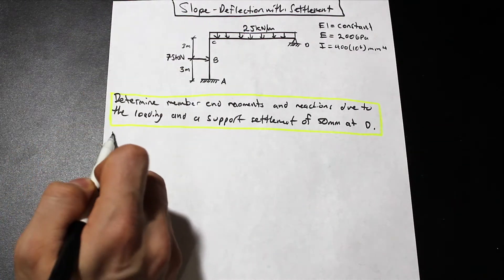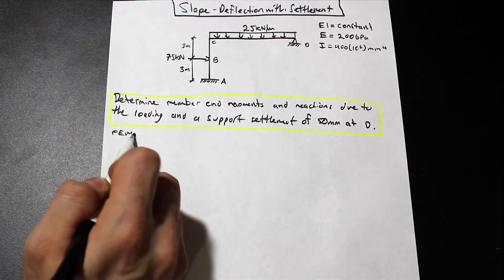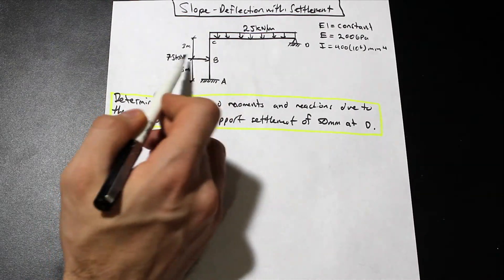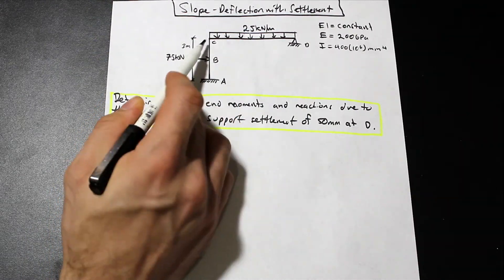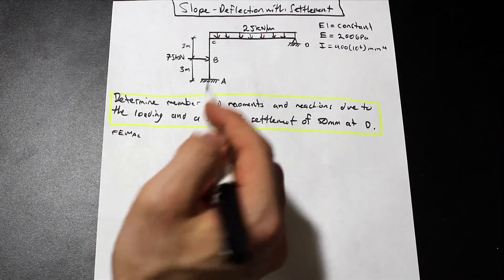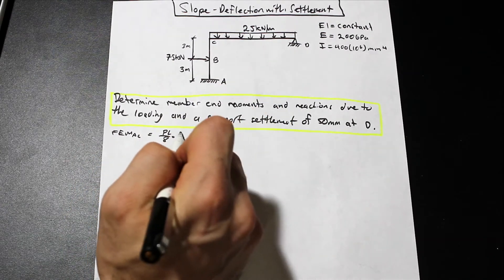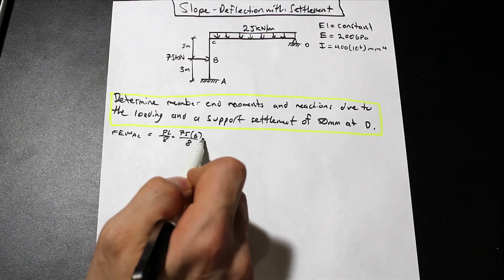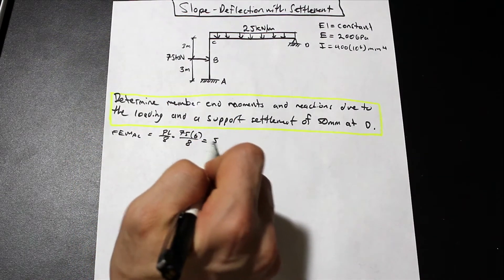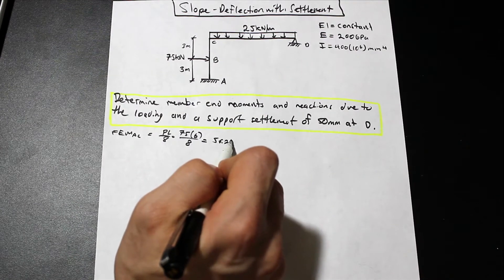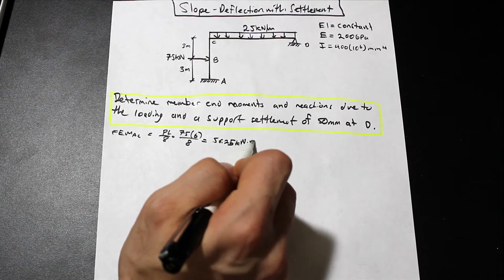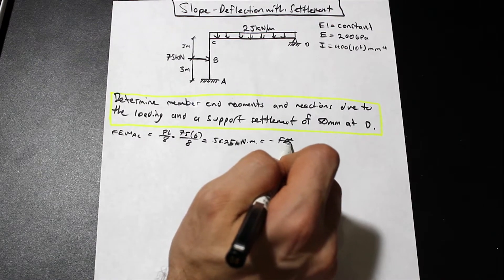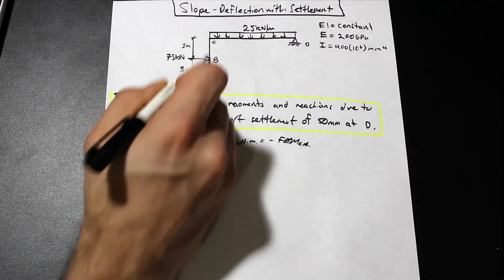The fixed end moment for AC — since we have a point load in the center, halfway between A and C — is going to be PL over 8. That's 75 times 6 over 8, which equals 56.25 kilonewton meters.